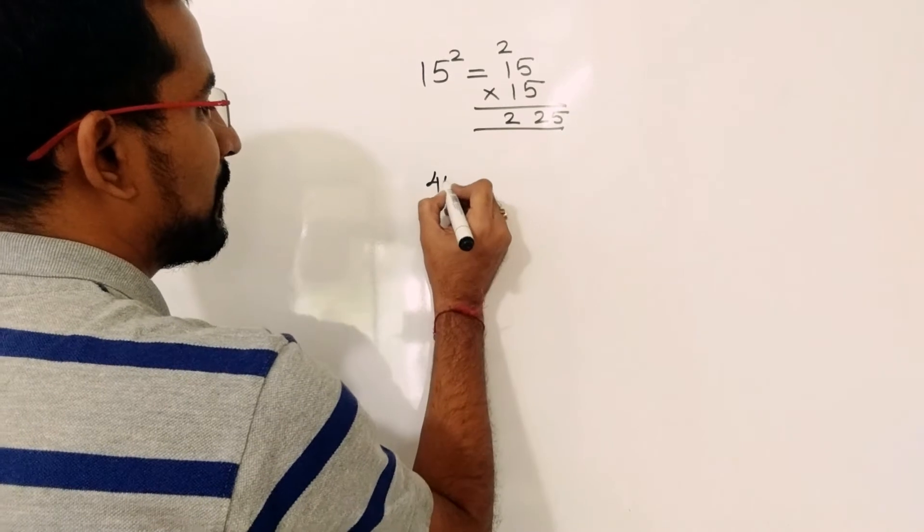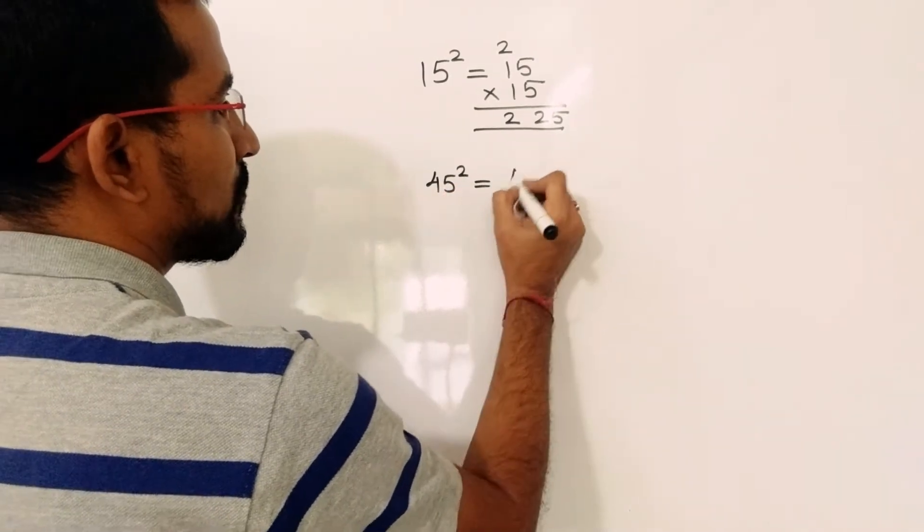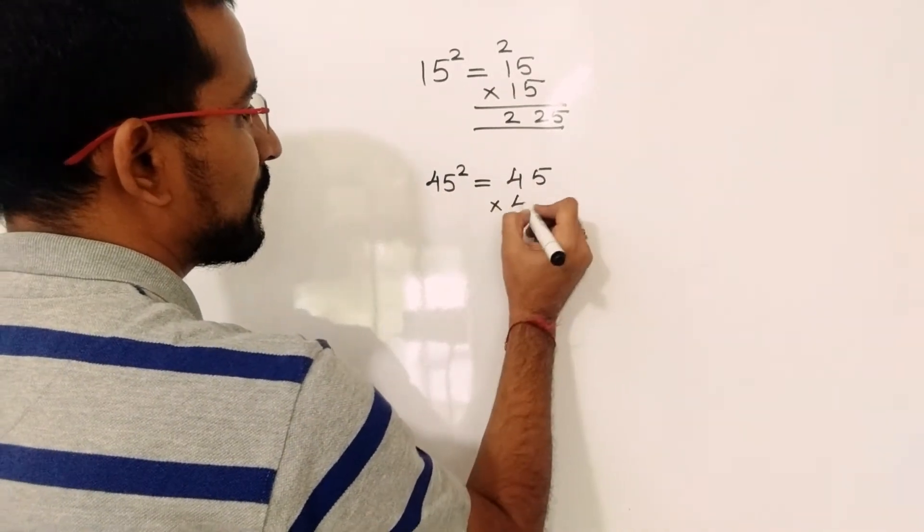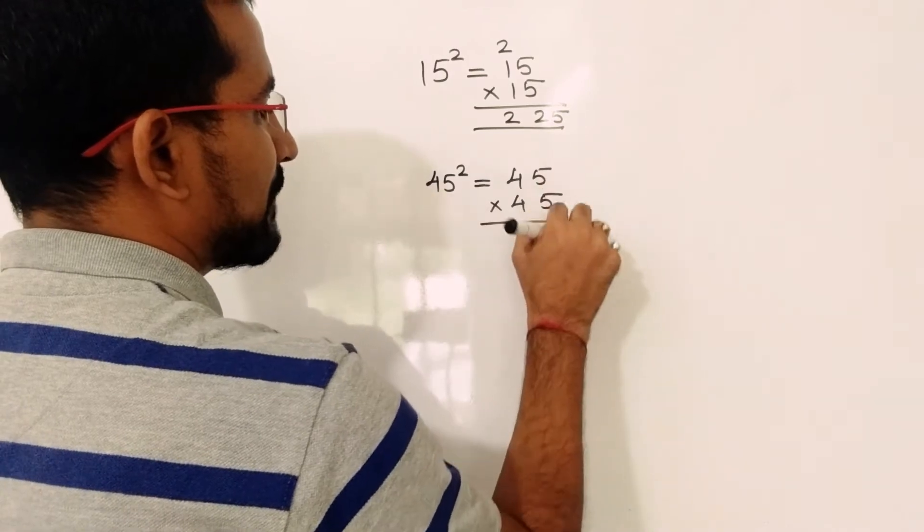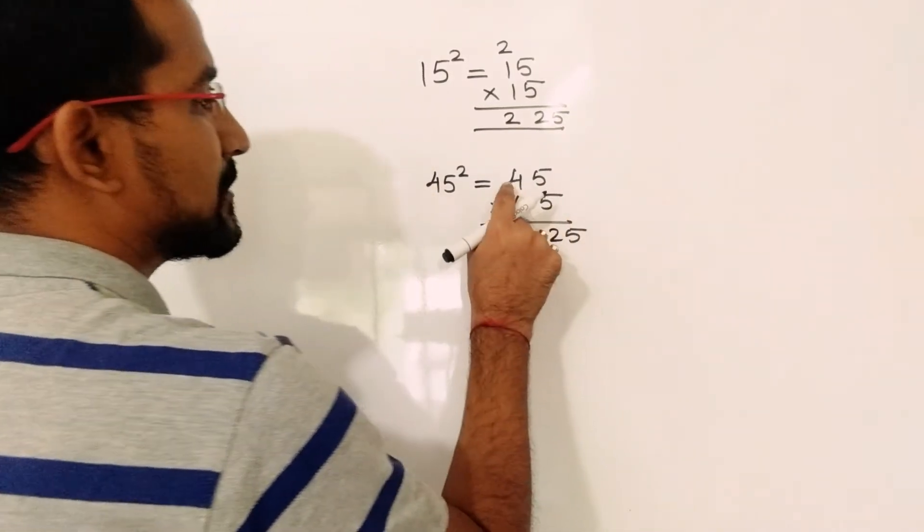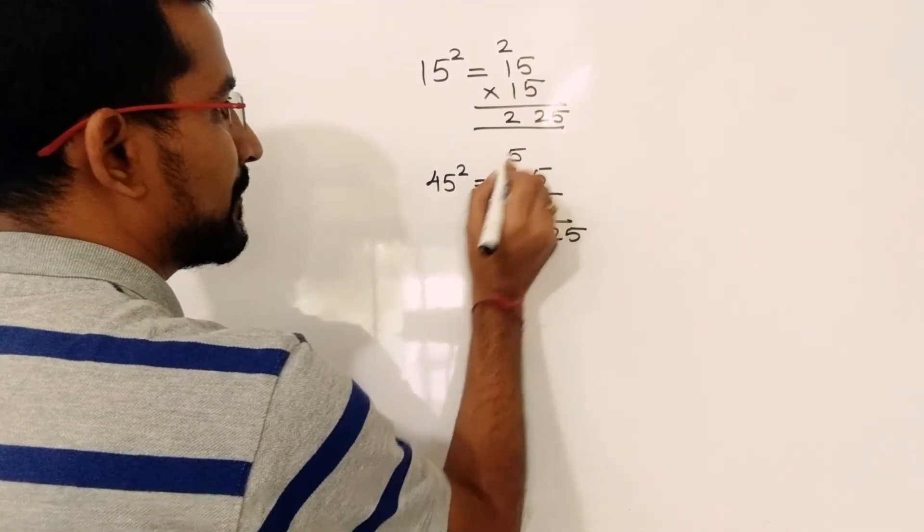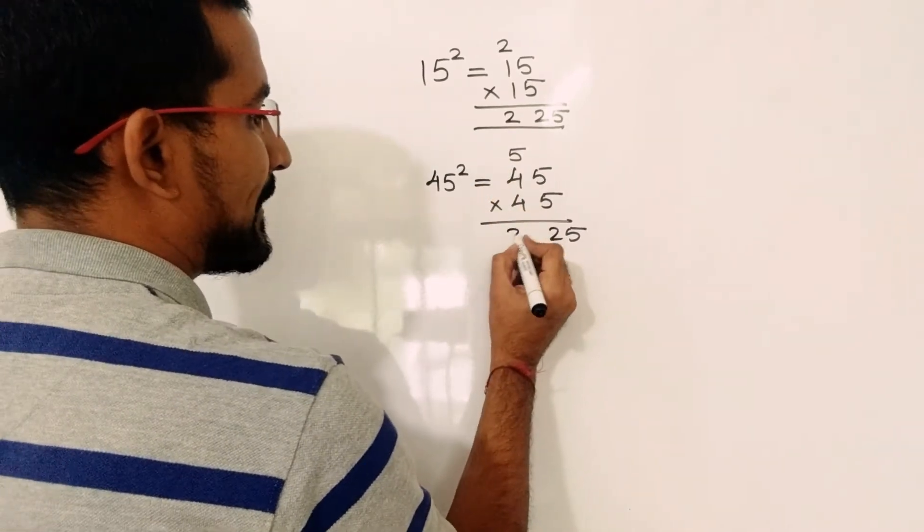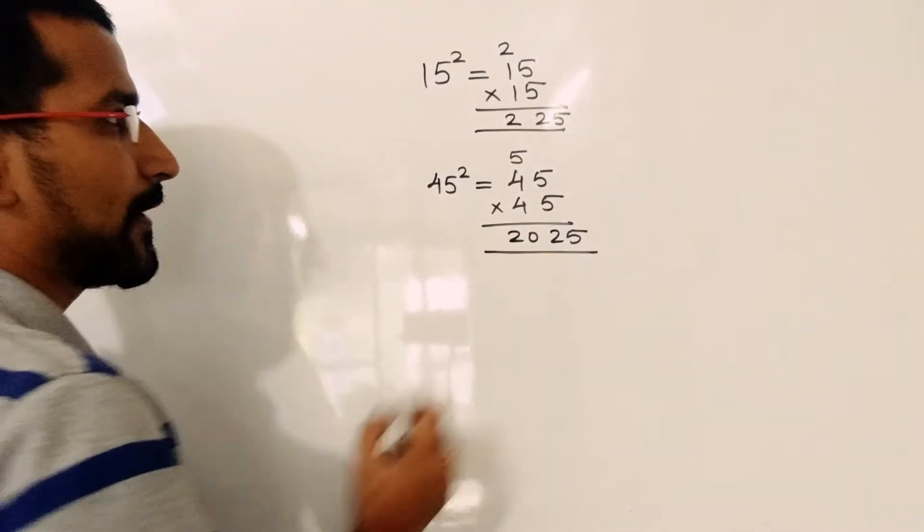We will take another example: 45 square. So 45 into 45. Now 5 into 5 is 25. Increase 4 by 1, so it will become 5. 5 into 4 is 20. So it will be 2025.